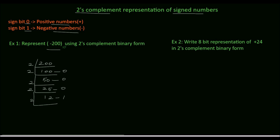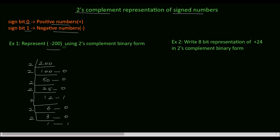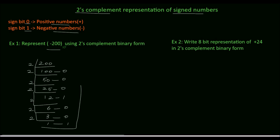Divide by 2: quotient is 6 and the remainder is 0. Divide by 2: quotient is 3 and the remainder is 0. Divide by 2: quotient is 1 and the remainder is 1. Writing the answer from bottom to top, the binary equivalent of decimal 200 is 11001000.